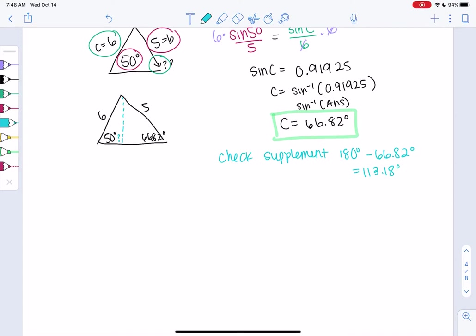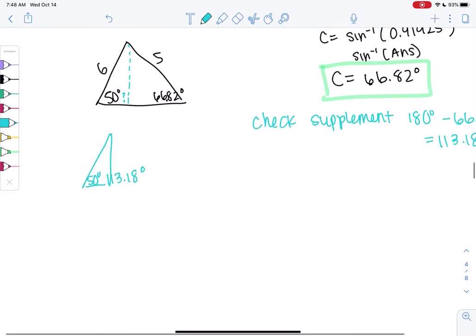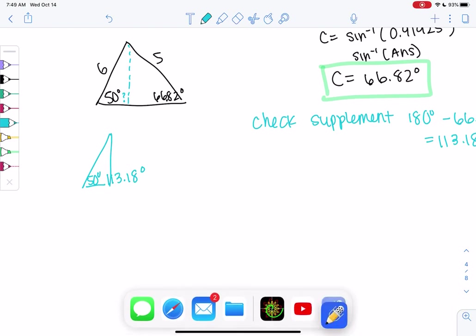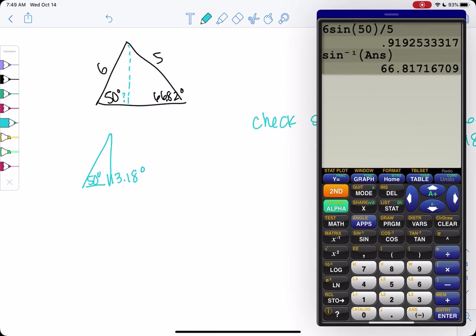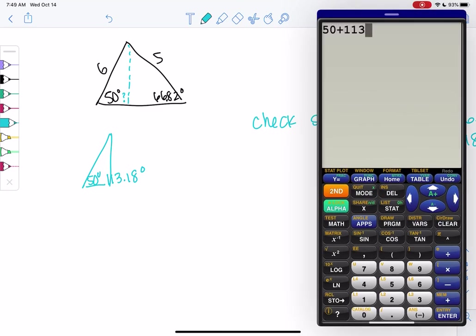And so then what we're going to do is compare that with the given angle to see if that's a possible triangle. So could we have a triangle with 50 degrees and 113.18? So if we do 50 plus 113.18, yeah, it's less than 180. So this second triangle actually is possible.